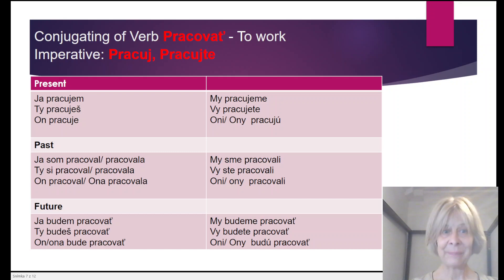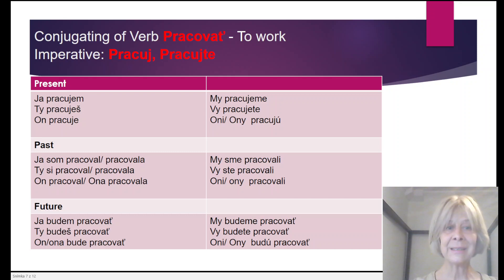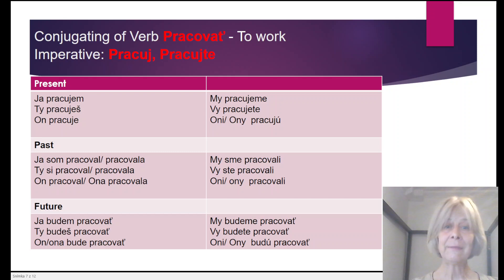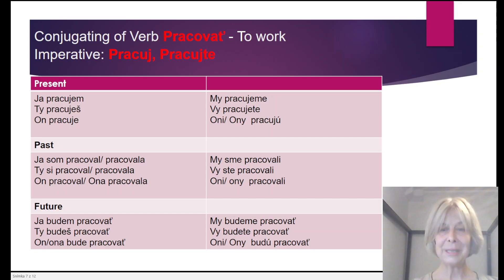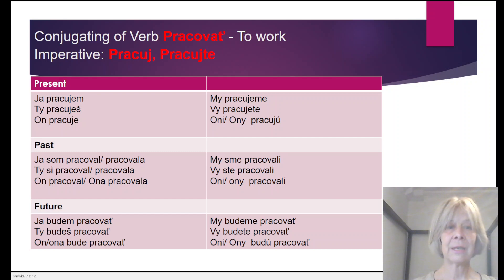Past tense: Ja som pracoval. Ja som pracovala. Ty si pracoval. Ty si pracovala. On pracoval. Ona pracovala. Plural: My sme pracovali. Vy ste pracovali. Oni pracovali. Future: Ja budem pracovať. Ty budeš pracovať. On/ona bude pracovať. My budeme pracovať. Vy budete pracovať. Oni budú pracovať.